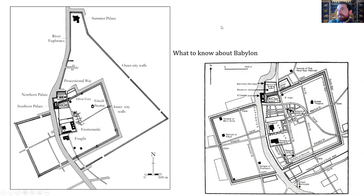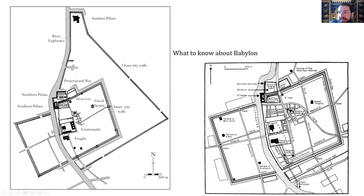Some things you should be aware of for Babylon, particularly in relation to the coming exam: you should be aware of the processional way and its importance, the coming of the gods, and the Akitu Festival. You should be aware of the Ishtar Gate and its importance in relation to the palace and the gods, the southern palace, the Etemenanki ziggurat, and the entirety of the Esagila sanctuary with the Temple of Marduk. You should also be aware of the general layout of the city — the east side being sacred, and the canals and where everything is located.